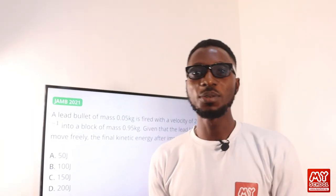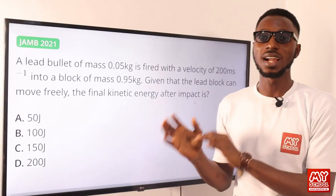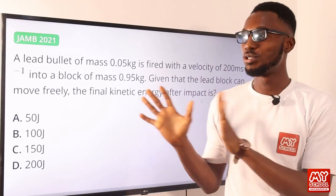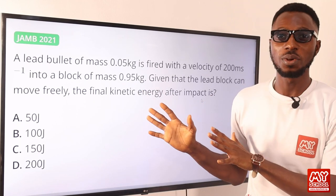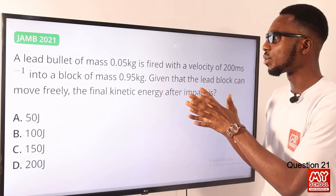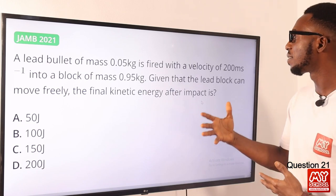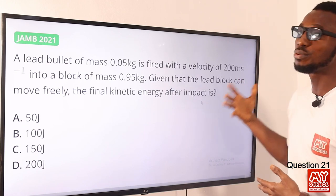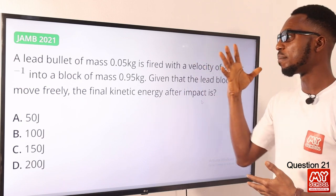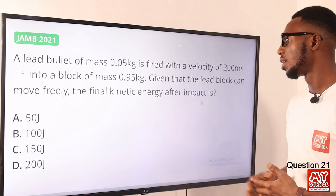Welcome back to my school YouTube channel. In this video lesson you and I will be tackling questions 21 to 40. We begin with question 21: a lead bullet of mass 0.05 kg is fired with a velocity of 200 meters per second into a block of mass 0.95 kg.